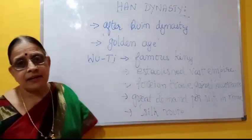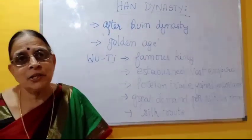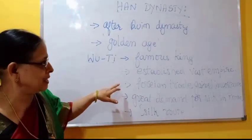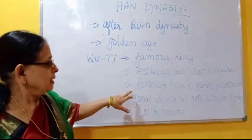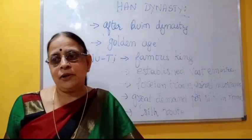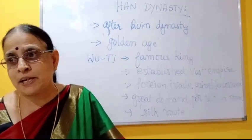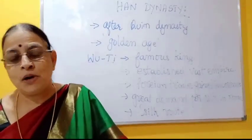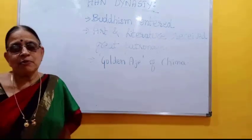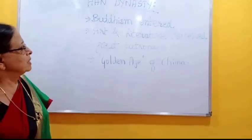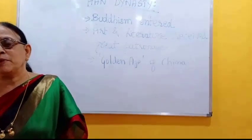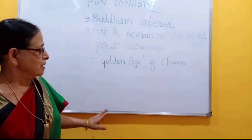After Qin dynasty, Han dynasty came into prominence in China. It is called the golden age, because there was all-round development in China during this period. Uti was the famous ruler of Han dynasty. He established a vast empire. Foreign trade gained importance during this dynasty. There was great demand for silk in Rome, and the trade route between China and Rome came to be called the Silk Route. Buddhism entered during the Han dynasty — people of China were attracted by the philosophy of Buddha and adopted Buddhism. Art and literature received great patronage. Since there was all-round development in agriculture, trade, art, etc., it is called the golden age of China.